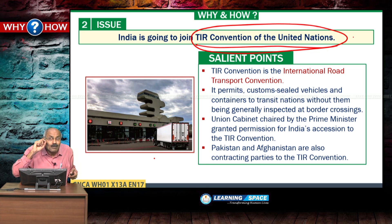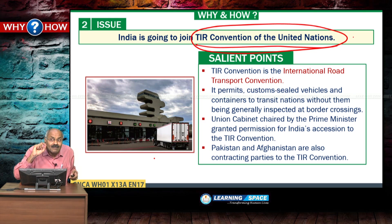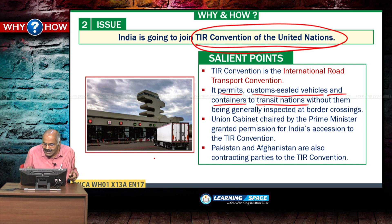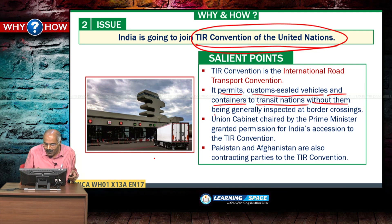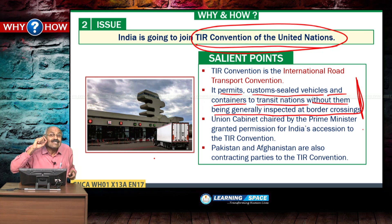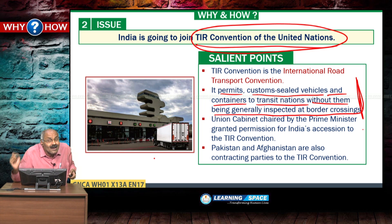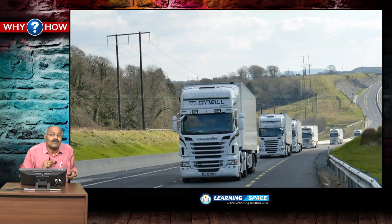The Union Cabinet gave approval for joining the TIR Convention. The TIR Convention permits customs-sealed vehicles and containers to transit nations — that is, to cross boundaries without being generally inspected at border crossings. So transit time will be reduced, and delays at border points will be minimized.